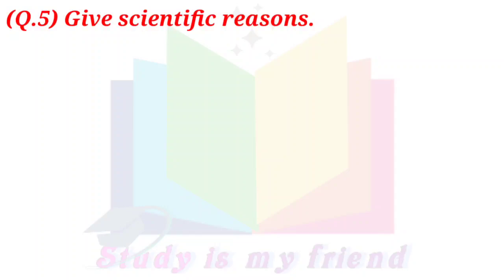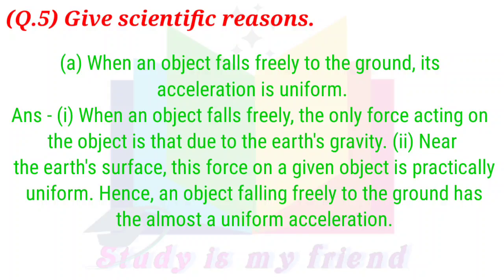Question 5. Give scientific reasons. A. When an object falls freely to the ground, its acceleration is uniform. Answer: When an object falls freely, the only force acting on the object is that due to the Earth's gravity. Near the Earth's surface, this force on a given object is practically uniform. Hence, an object falling freely to the ground has almost uniform acceleration.